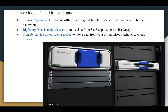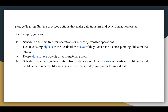There are other Google Cloud transfer options as well. Transfer Appliance is for moving large offline data sets or data from sources with limited bandwidth — it's essentially a physical device. BigQuery Data Transfer Service moves data from software-as-a-service applications to BigQuery. Finally, Transfer Service for on-premises data moves data from your on-premises machines to Cloud Storage.